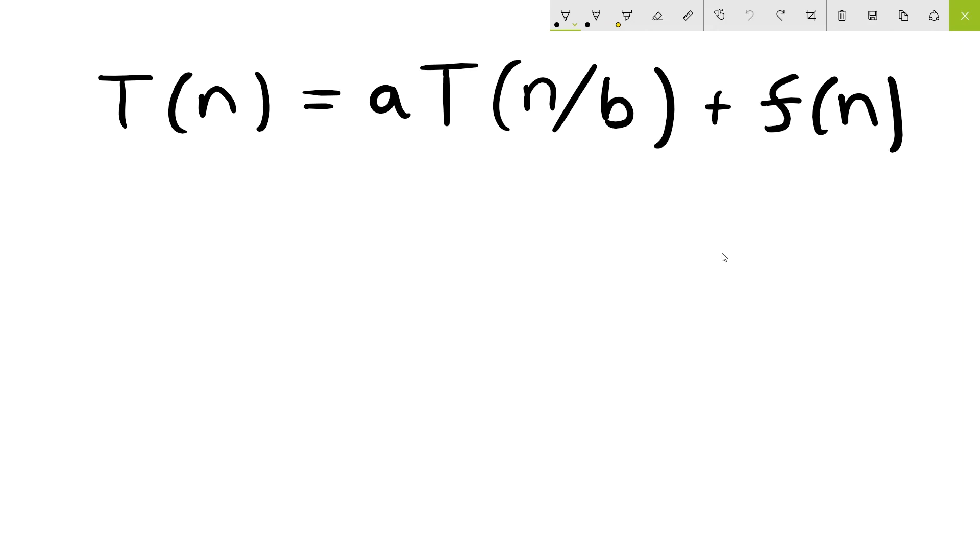If we have an algorithm that can be described in the master method recurrence form, then there are three rules we need to use to figure out what the asymptotic runtime of that algorithm is.